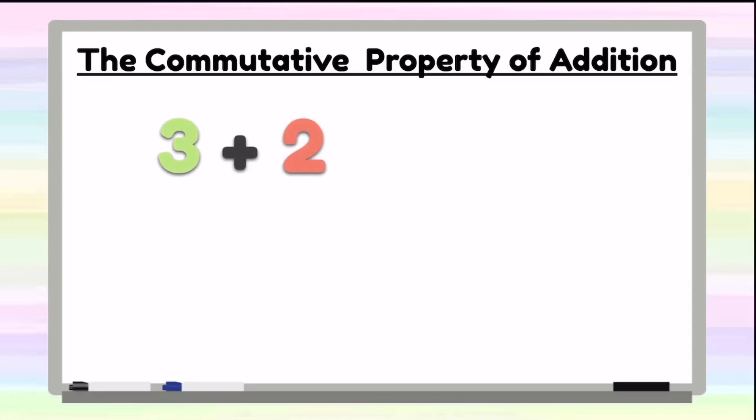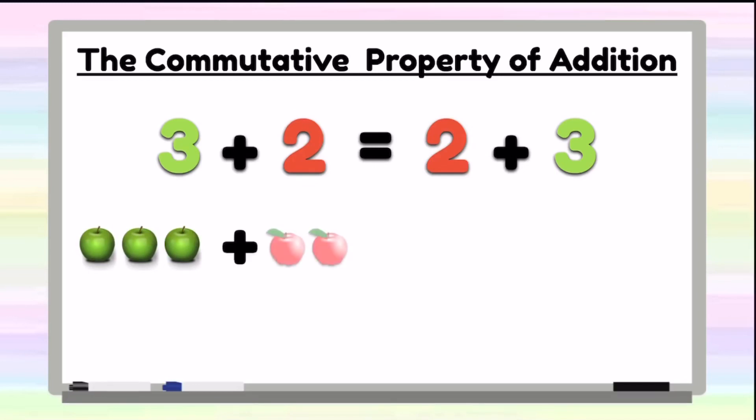Here we have 3 plus 2. We know that 3 plus 2 is the same thing as 2 plus 3. Those are equal. So we know that if we have 3 green apples and we add 2 red apples, that will be equal to or the same exact thing as adding 2 apples and then adding the 3 green apples.